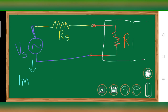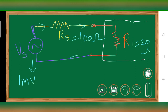Let's say our RS is 100 ohms and the input impedance R1 of the amplifier is 20 ohms. These two are in series, so current would be constant but voltage drop across each resistance would be different. The voltage drop across RS would be high — let's say around 0.7 millivolts.